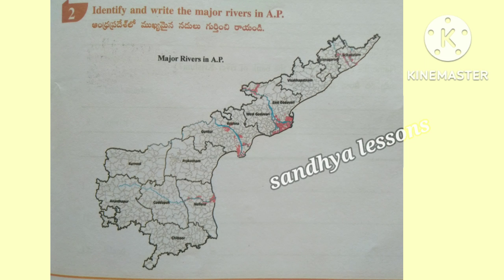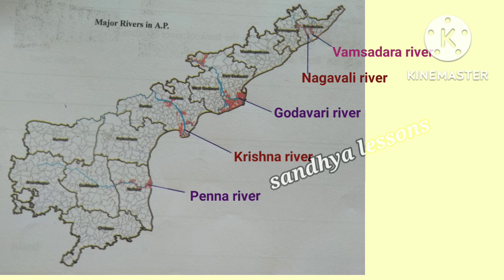Second, identify and write the major rivers in Andhra Pradesh. Major rivers in Andhra Pradesh are: Vamsadara river, Nagavali river, Godavari river, Krishna river, and Penna river.